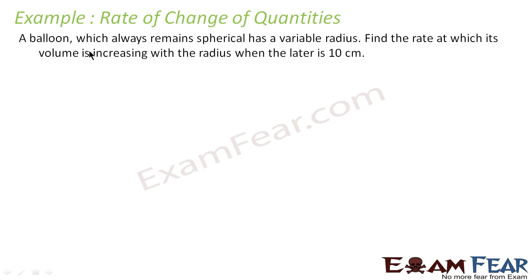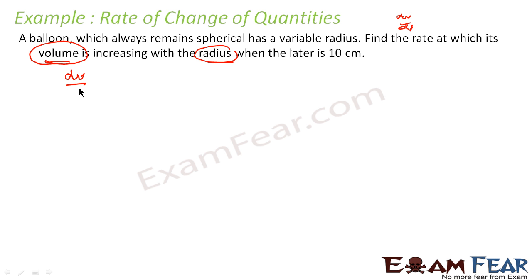Let's take one more example. A balloon which is always spherical has a variable radius — similar to the last question. We have to find the rate at which volume is increasing with the radius. Please note: in most questions we found dV/dt, because we wanted change of volume with respect to time. But in this case, we have to find dV/dr — the rate at which the volume is changing with respect to radius.